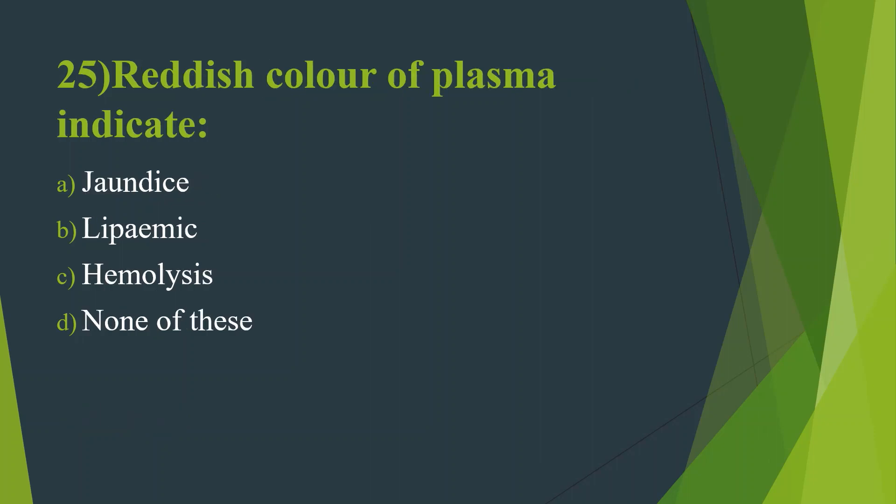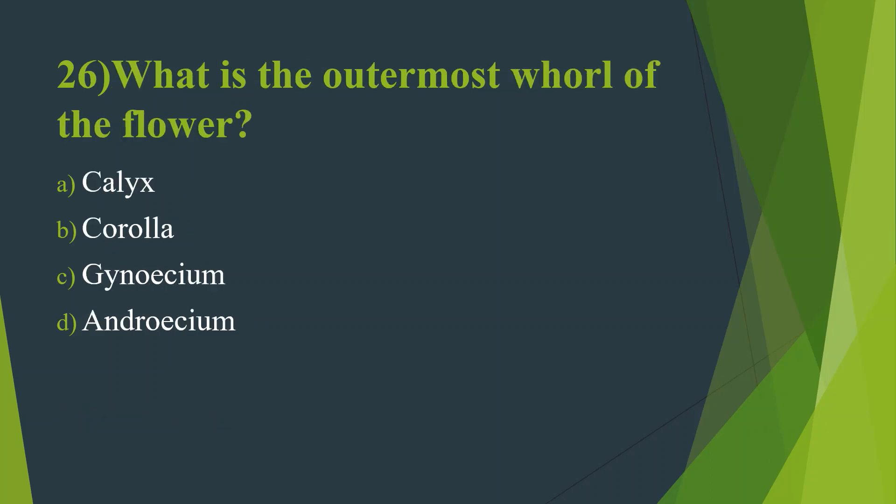Twenty-fifth question: Reddish color of plasma indicates — Option A, Jaundice. Option B, Lipemic. Option C, Hemolysis. Option D, None of these. Answer is Option C, Hemolysis.